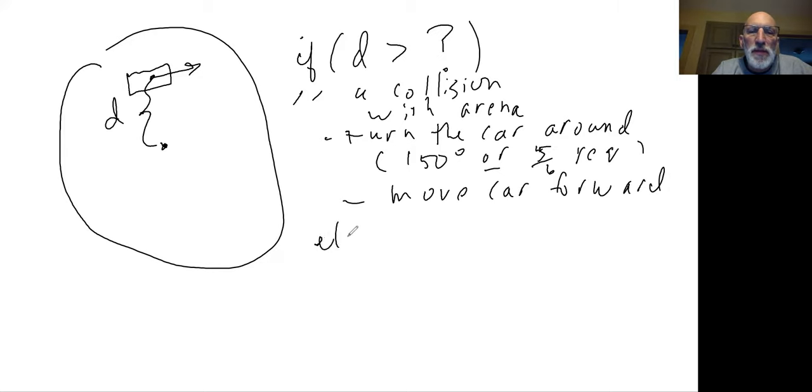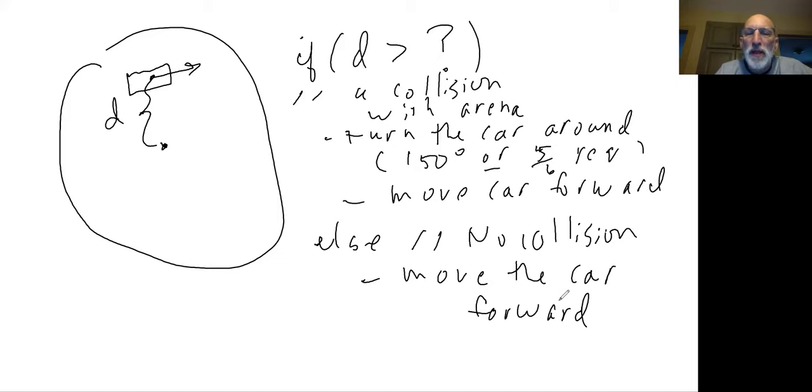Now, if that is not the case, that D is greater than some value, that means it's still inside the boundary of the arena. So you have no collision. This is a little comment: no collision. So you just move the car forward. In other words, now you've got to be careful. You don't want to move the car too far forward because if you move it too far forward, it might go into the arena. So that's the idea of seeing if one car is about to collide into the arena.